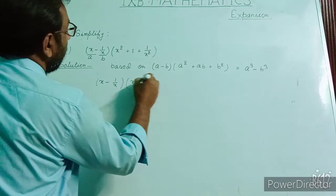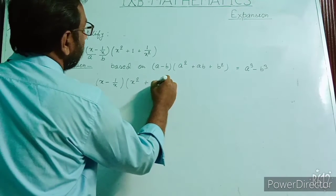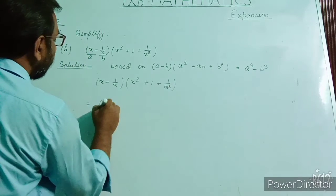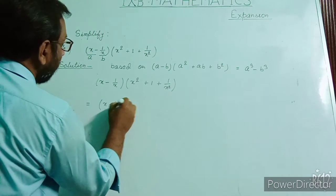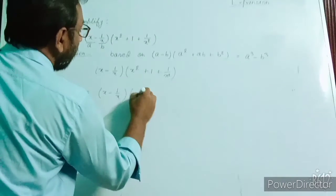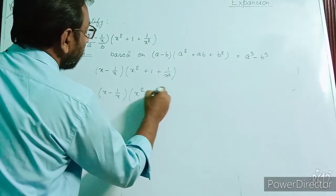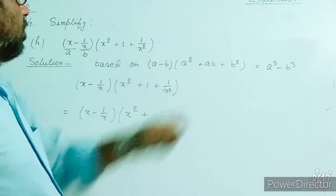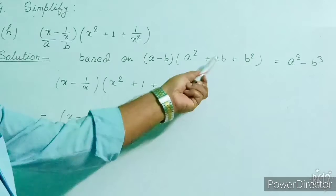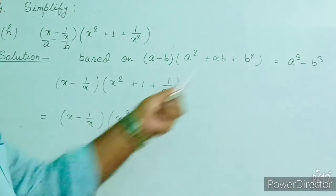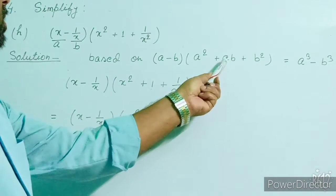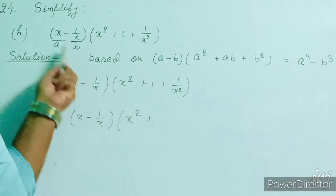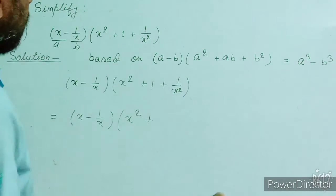So we write the question first: x minus 1/x, into x squared plus 1 plus 1/x squared. In the second step, we write x minus 1/x, x squared plus... we write the 1 in the form of ab, because at the place of ab we are getting 1. Let us see: if we write this 1 in the form of ab where a is x and b is 1/x, then what will we get?